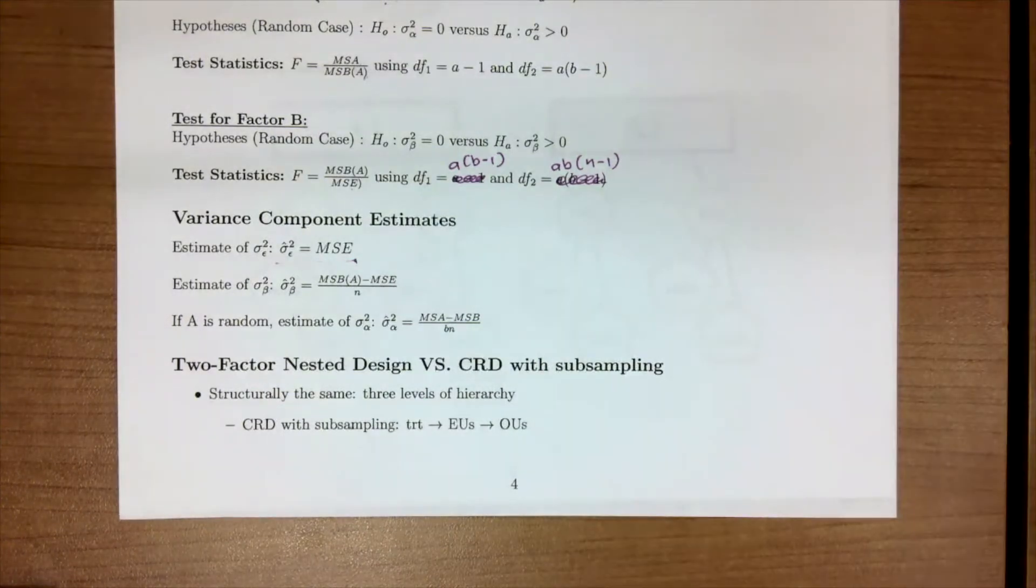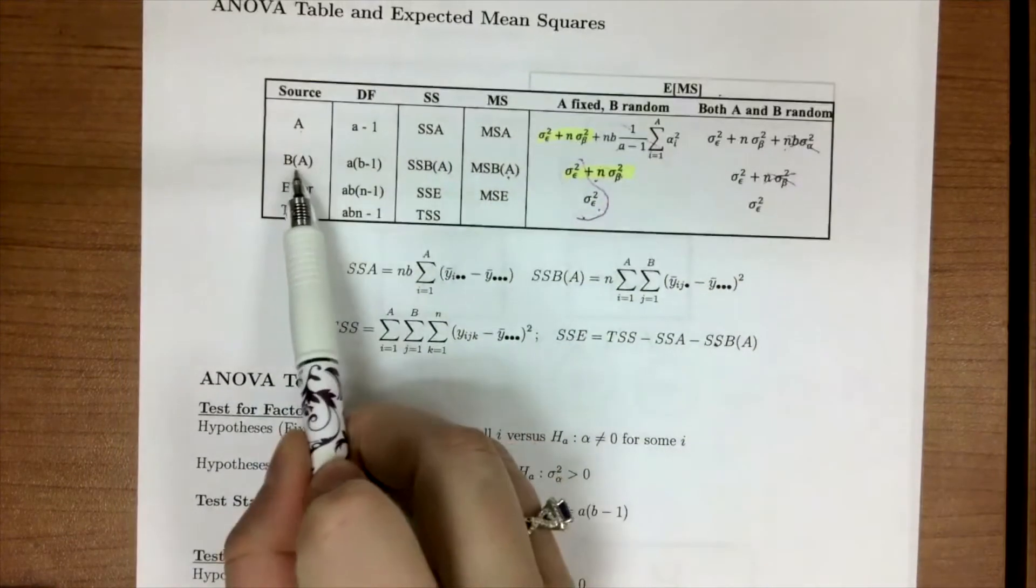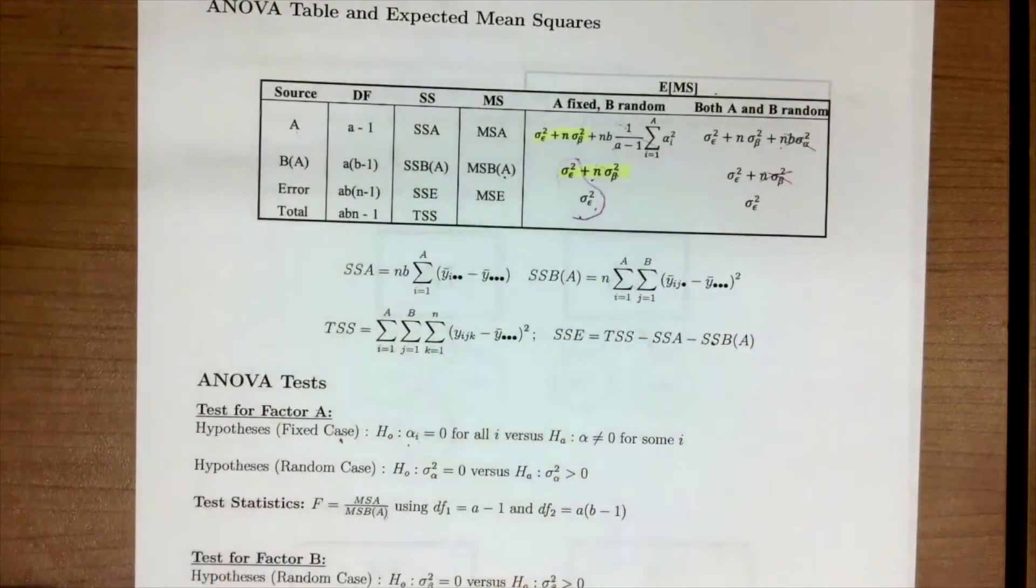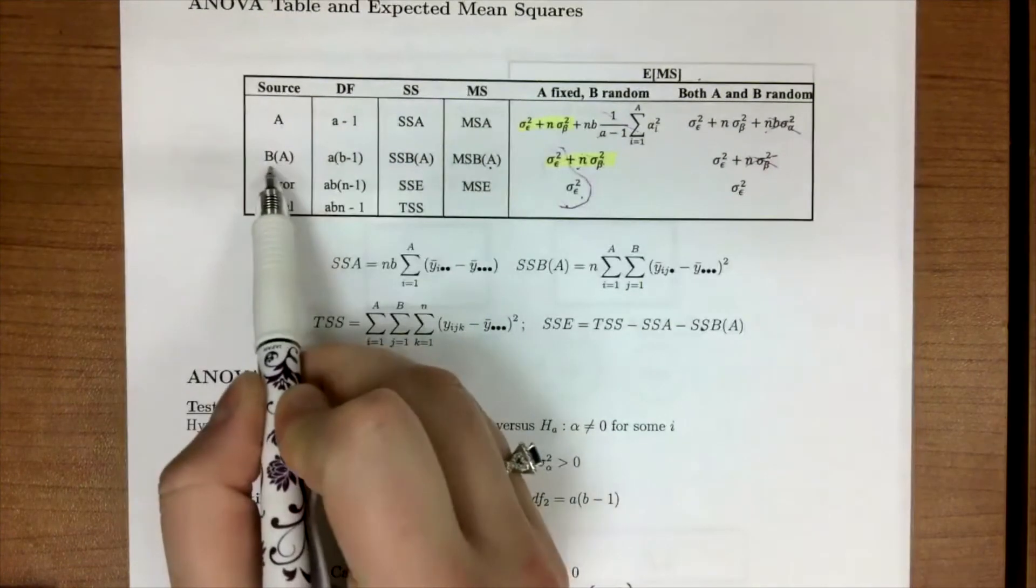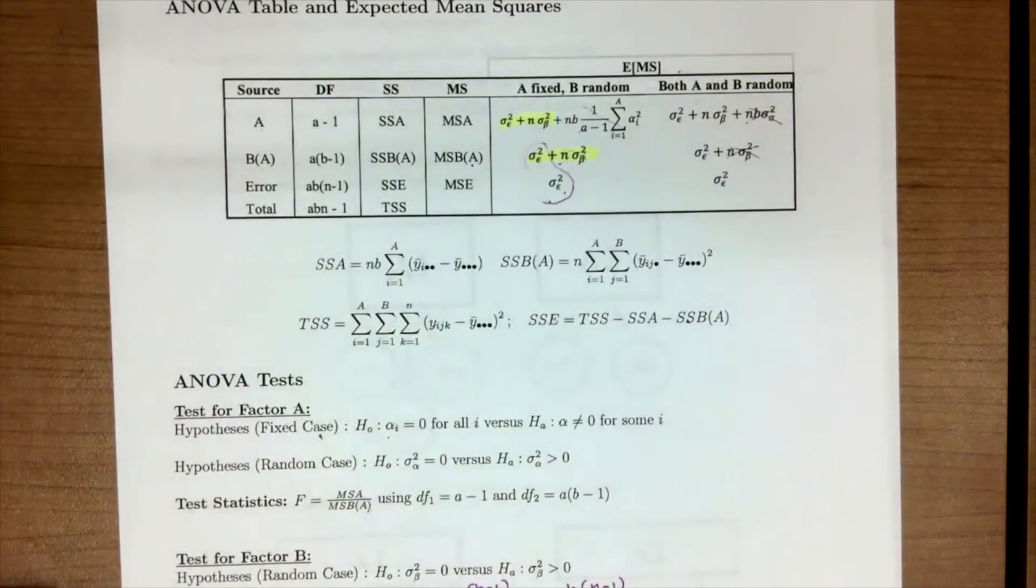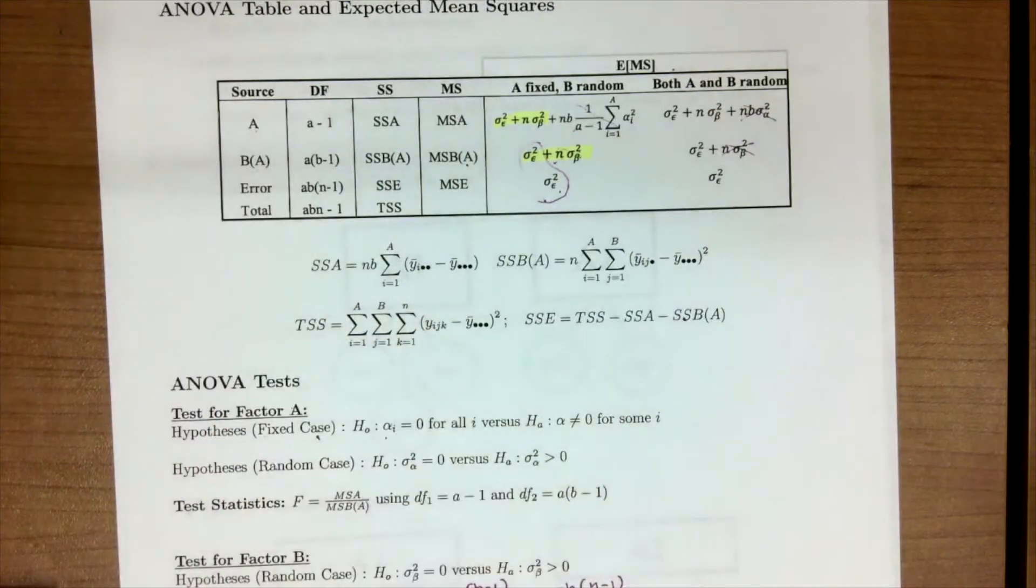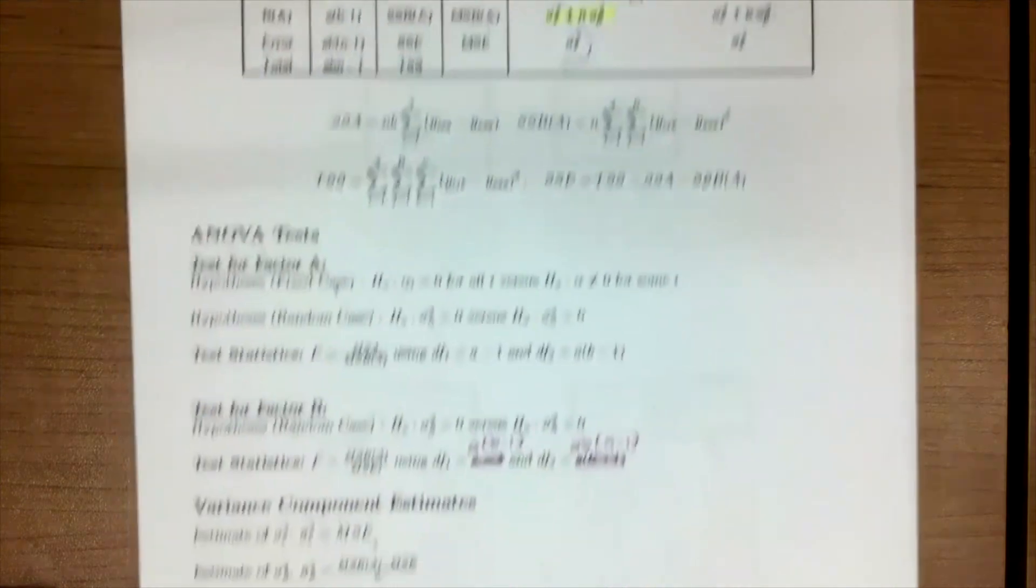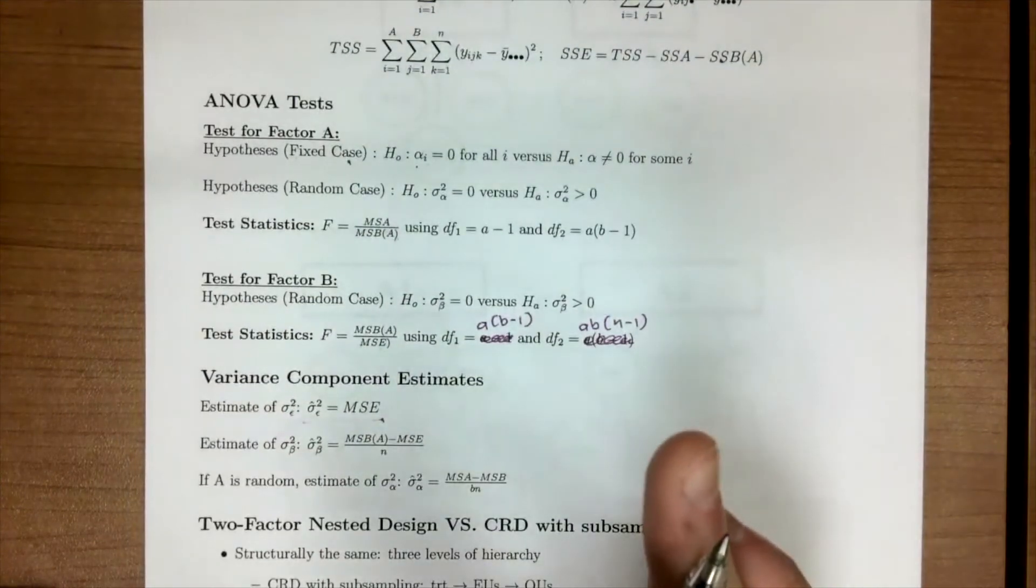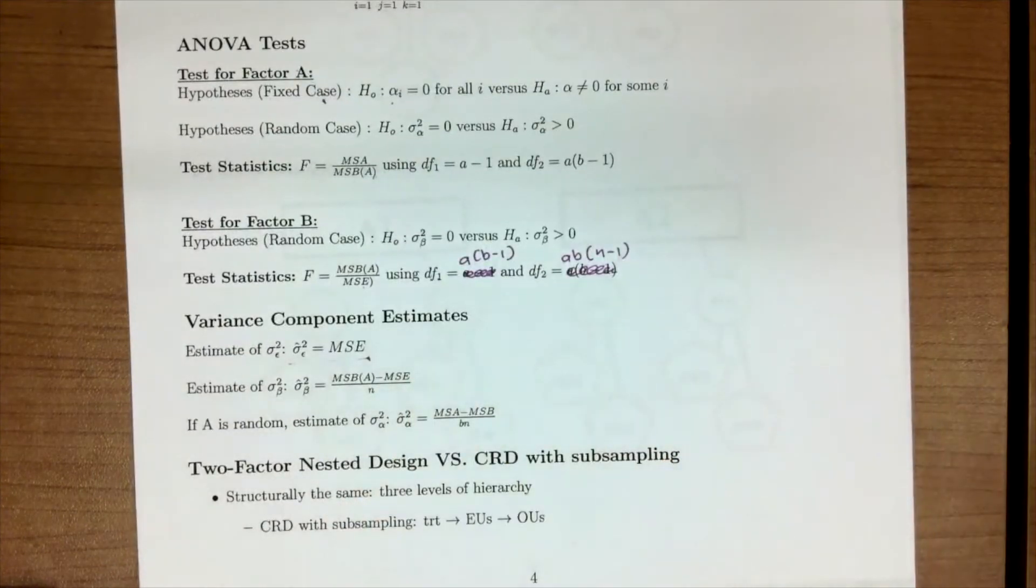So key points that I just want to recap over is that B is nested within A, so we have a hierarchy of factors. When we're testing A(B), we're trying to see if there's a variability from machine head to machine head. And when we're testing A, we're looking to see if there's a difference between the two machines. We find our test statistics based off looking at our expected mean squares, and we're still trying to understand those variance components.